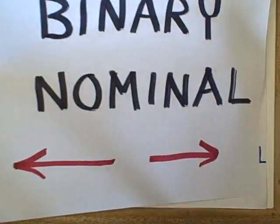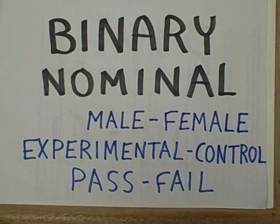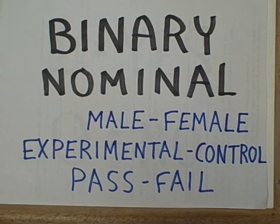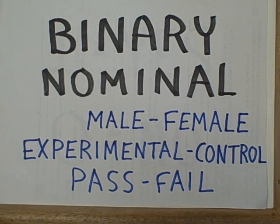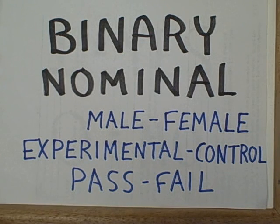Let's take a look at some examples of variables measured in binary nominal scaling. Gender, for example — male or female. When we're doing an experiment and each subject is randomly assigned to an experimental group receiving a special treatment, or a control group receiving no treatment or a placebo, that again is binary nominal scaling. When we give any kind of test or outcome measure in which performance is measured pass or fail, once again we are talking about binary nominal scaling.